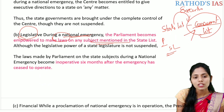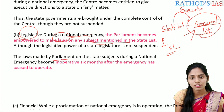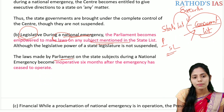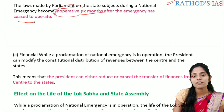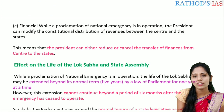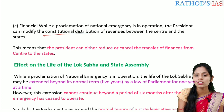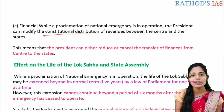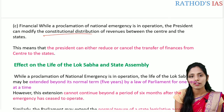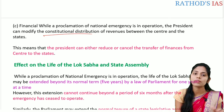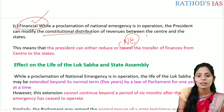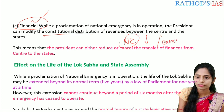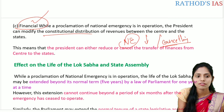The laws made by parliament regarding the state list during national emergency become inoperative six months after the emergency ceases to operate. Regarding financial relations: when a proclamation of national emergency is in operation, the president can modify the constitutional distribution of revenues between the centre and the state. The president can either increase, reduce, or cancel the transfer of finances from the centre to the state.